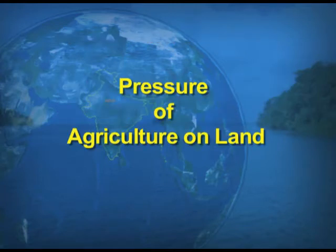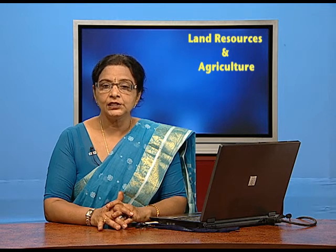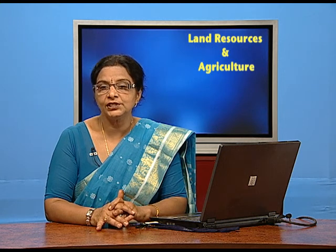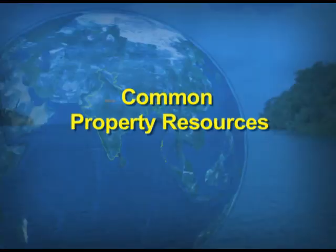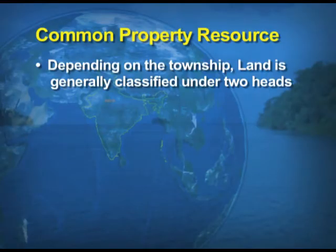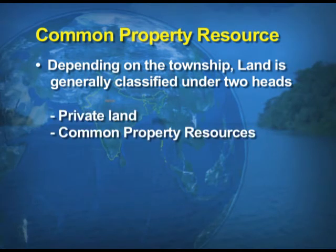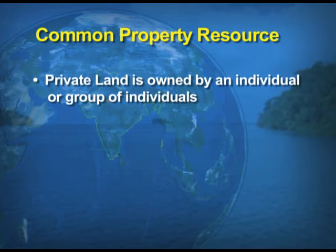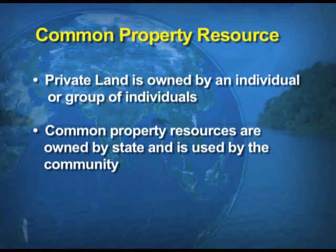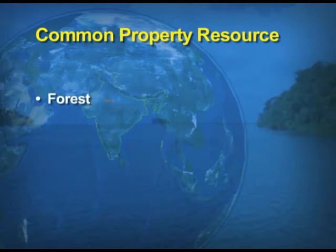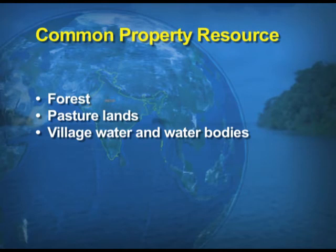The third factor is the pressure of agriculture on land. The pressure of agriculture on land remains the same, although the contribution of agriculture reduces with time due to a change in the mindset of people. Resources are divided under two heads: private and common property resources. Private resources are owned by individuals or groups of individuals, while common property resources are owned by the state and used by the community — for example, forest land, pasture land, village water and water bodies.